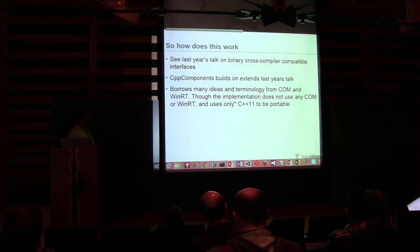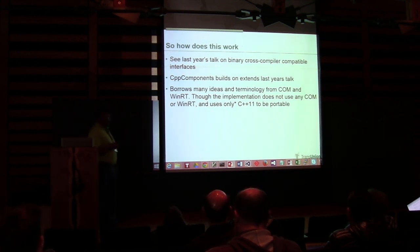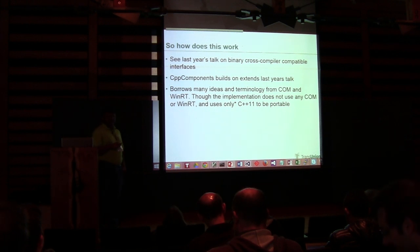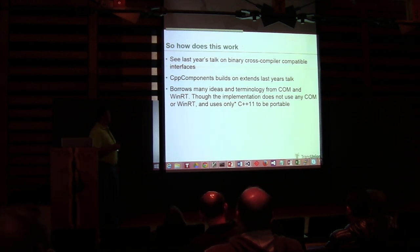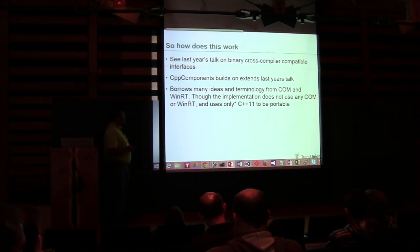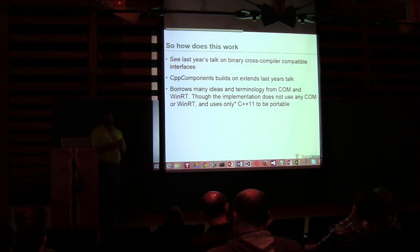So how does this work? I gave a talk last year on binary cross-compatible interfaces — very code-heavy, not as many usage examples. I'll refer to that talk for some details about how we got there and some background about calling-convention-agnostic cross interfaces, but I'll summarize. This builds on and extends last year's talk. We borrow many ideas and terminology from COM and WinRT. The implementation doesn't use any COM or WinRT — it uses only C++11 to be portable.